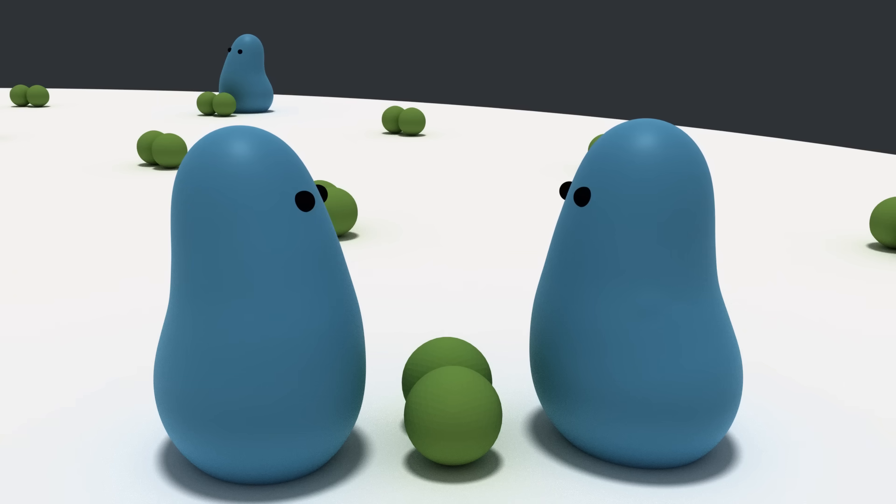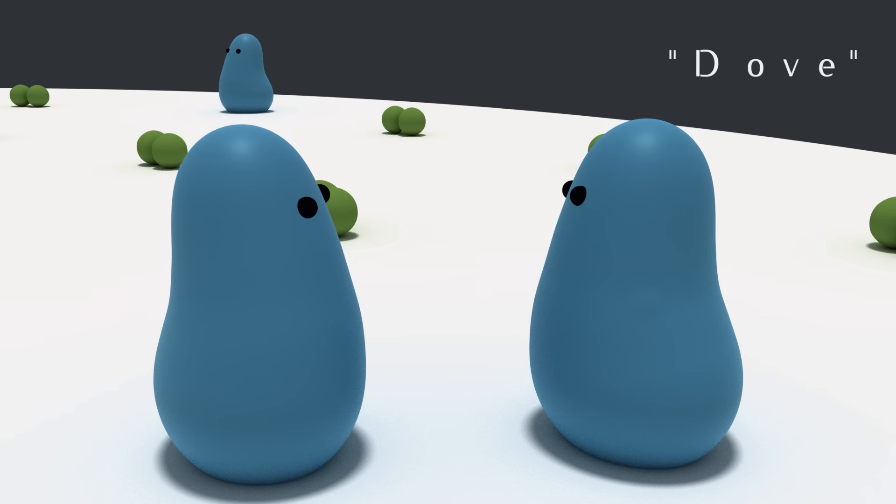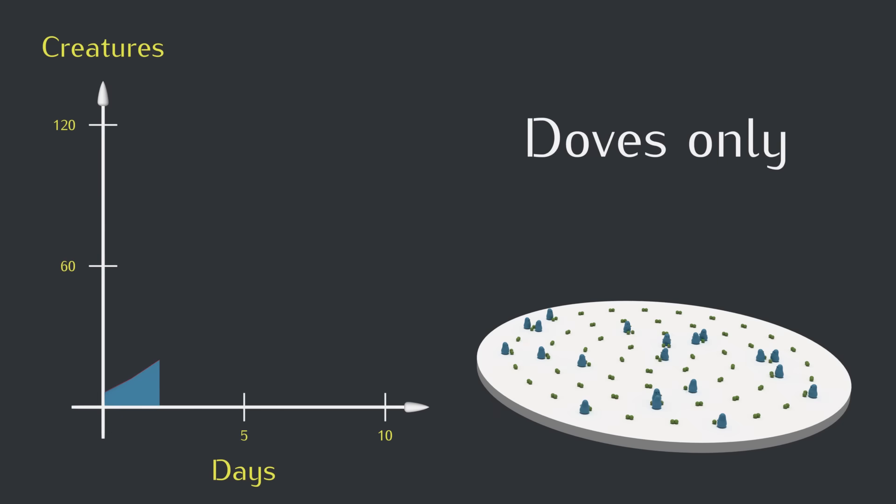We'll start out by having only one possible strategy for creatures who run into each other. They'll just share, each taking a piece of food and going home to survive to the next day. And because this strategy is so nice, we'll give it the name Dove. Alright, let's let things run for a bit.